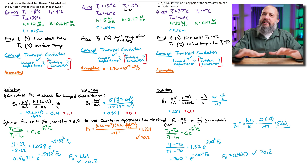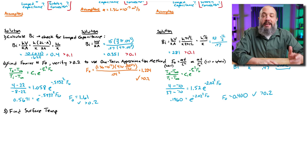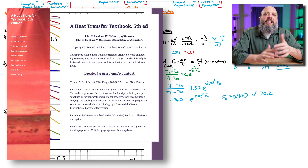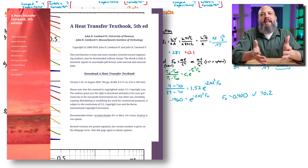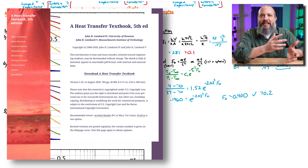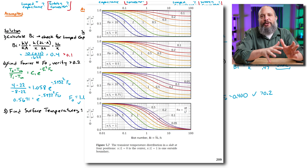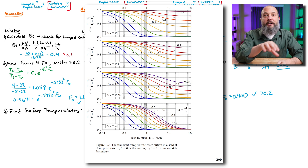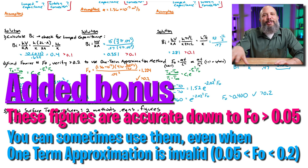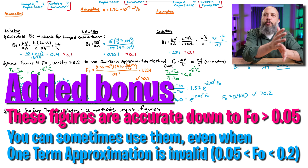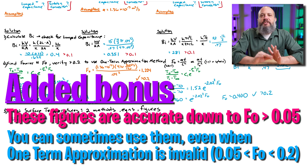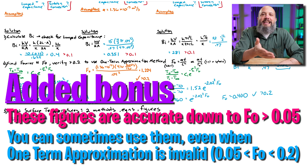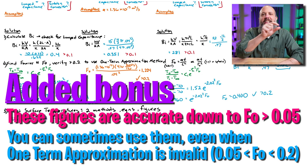To find surface temperatures, there are two methods: one using equations and one using figures. Equations are more accurate but figures are a little bit faster. I strongly recommend the free textbook by Leinhardt — the author created figures for sudden convection problems to help find surface temperatures for walls, cylinders, and spheres, avoiding the surface temperature equations. To use these figures, you need the Biot number on the horizontal axis and the Fourier number to identify which curved line to follow.